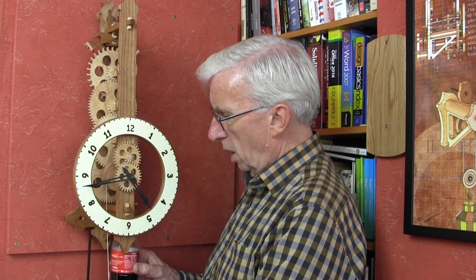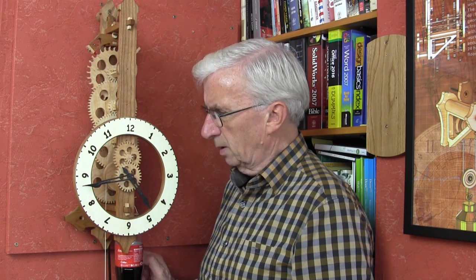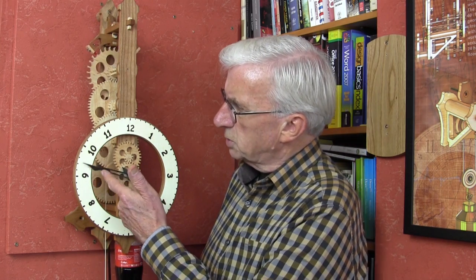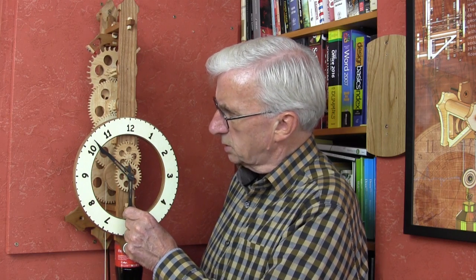To adjust the rate of the clock, you need to move the pendulum bulb up to speed it up, and push it down to slow it down. And of course, to wind it, as we've just shown, pull on the counterweight string and slightly lift on the weight string. That's it. Adjust the time to give you the correct time, and away you go. And that's it. Thank you.